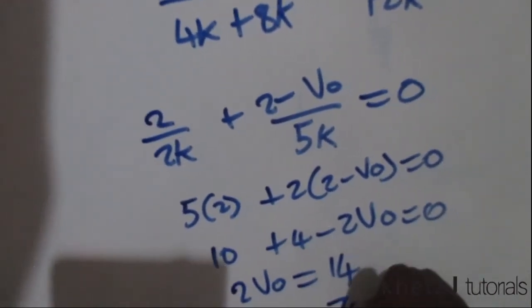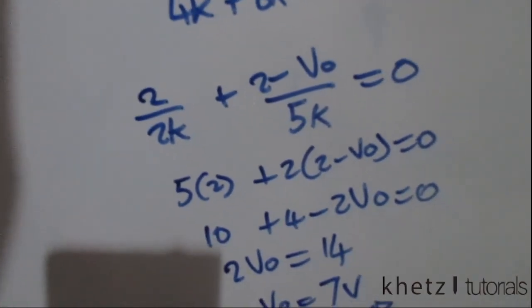Which means VO is equal to 7 volts and that is how you solve this particular problem.